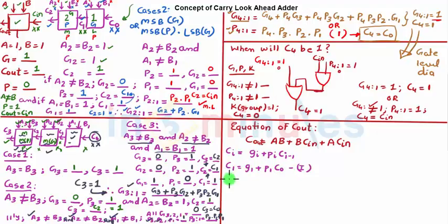C2 similarly is nothing but G2 plus P2 into C1. Let's substitute C1 from equation 1 here, so it is nothing but G2 plus P2 G1 plus P2 P1 C0. This is equation number 2.